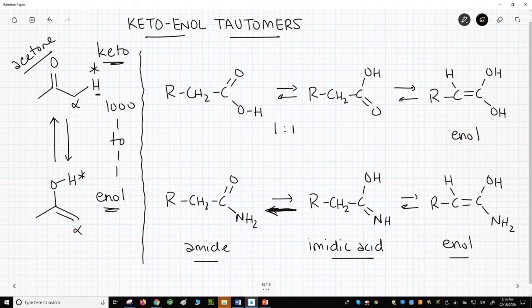Sometimes students will look at tautomers and refer to them as resonance forms. While resonance forms often do involve the movement of a pi bond, just like these tautomer examples, remember that tautomers involve the movement of a hydrogen atom. Atom is the key word.